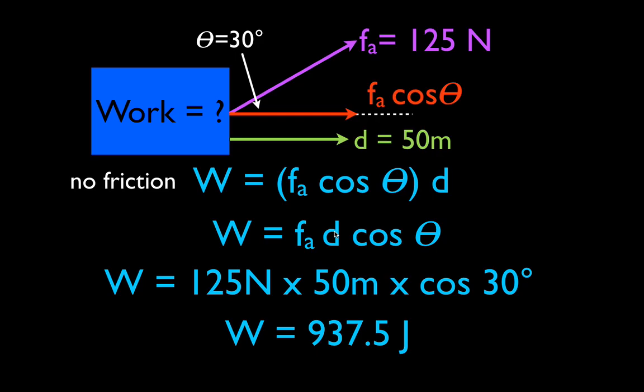When you have a force of 125 N applied 30 degrees above the horizontal and you move an object 50 meters, you do 937.5 joules of work.